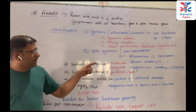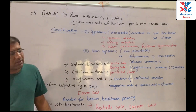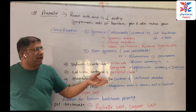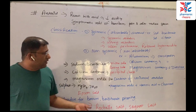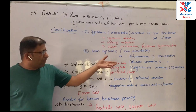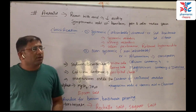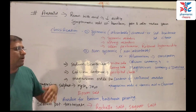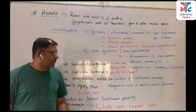Magnesium-containing antacids cause diarrhea. In pharmacology, the combination of aluminum and magnesium can be used so that the constipation and diarrhea effects balance each other out.